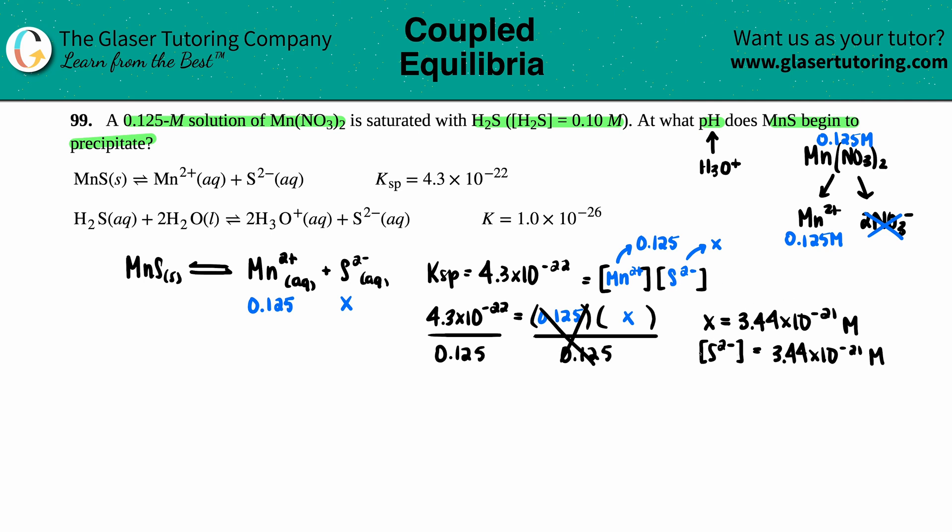Now, where do I go from here? I got to get over to that other equation. I use this one up, so I don't have to use it ever again. But if I notice, if I look into this equation, I have another S²⁻. So it seems like I found the S²⁻ concentration here, and now I'm just going to use it and plug it in for there. And that's how I go from one equation to another.